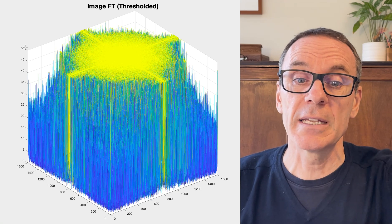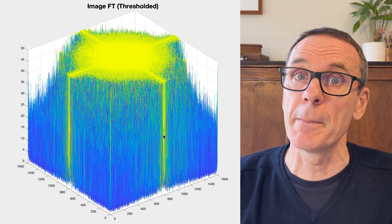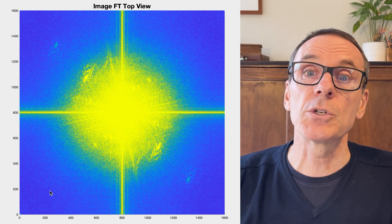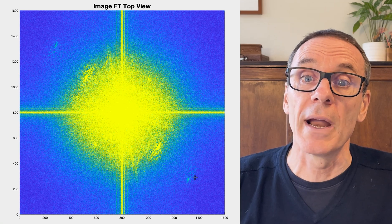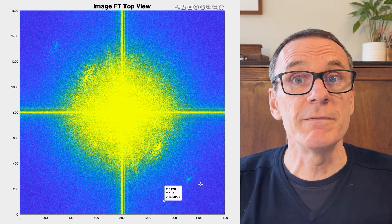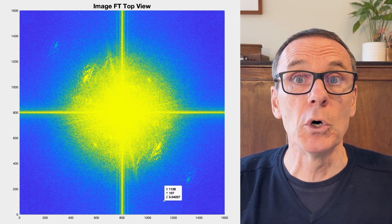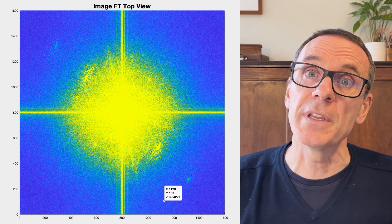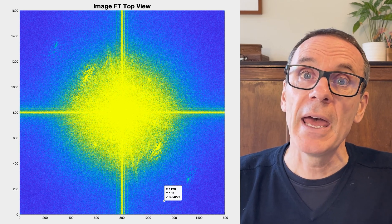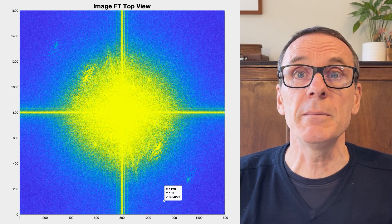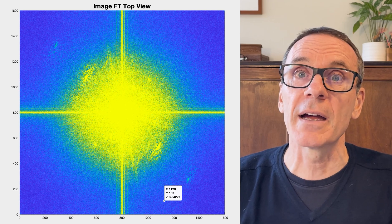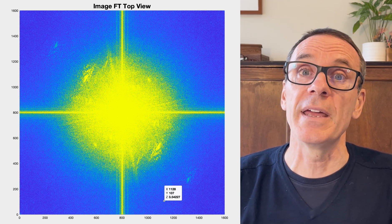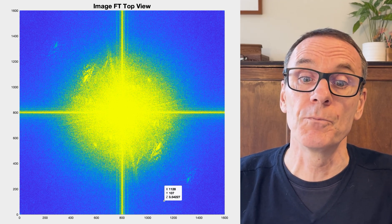Let's look at a top view to see how much area this corresponds to. It's all of this blue area — so those values are very, very small. And it leads you to wonder: are they actually important for the image? If they're not really that important, perhaps we can put a watermark there, vary them, and do it in a way that's not going to be detectable.